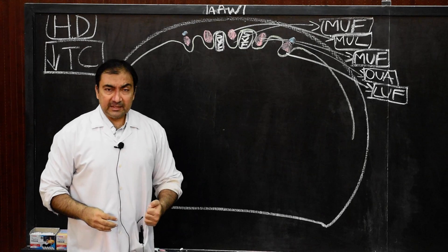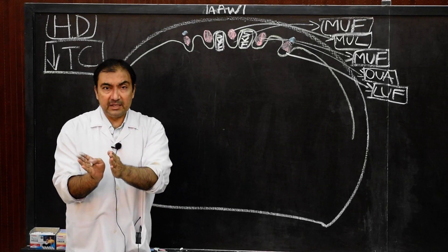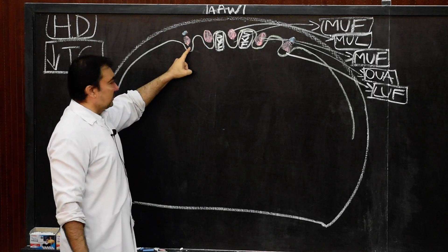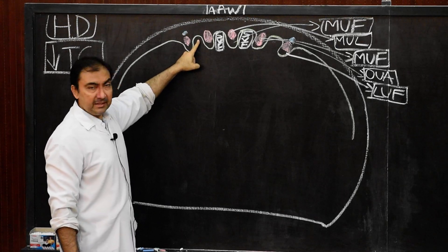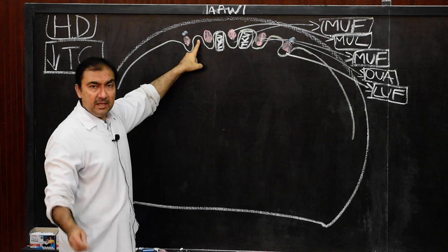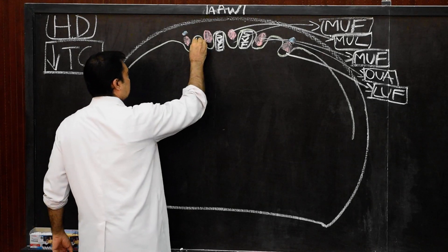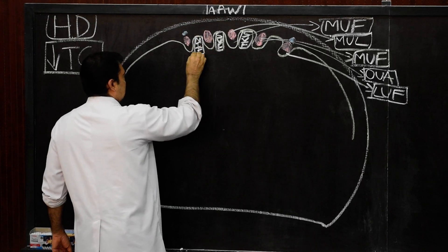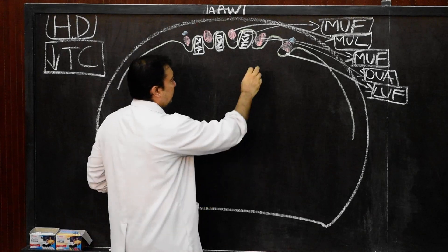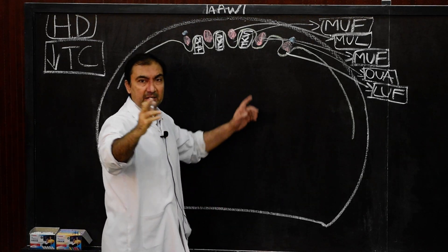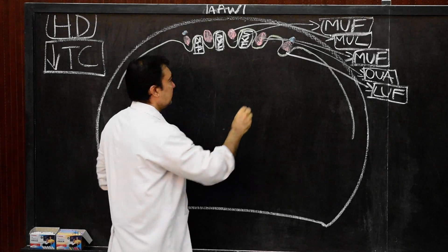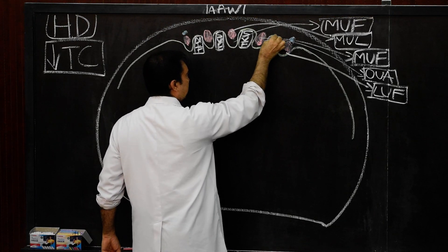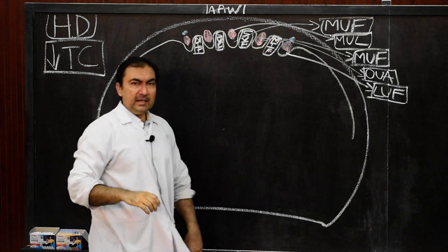The supravesical fossa is located between the median umbilical fold and medial umbilical fold, right and left. Between the medial umbilical fold and lateral umbilical fold, there is another fossa known as the medial inguinal fossa. On both sides, in between the medial and lateral umbilical fold, we have the medial inguinal fossa.